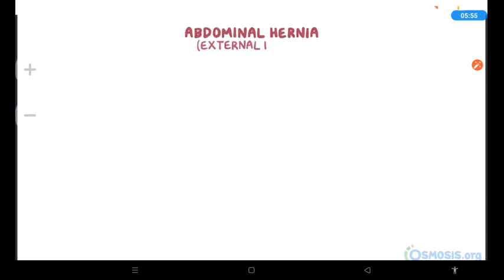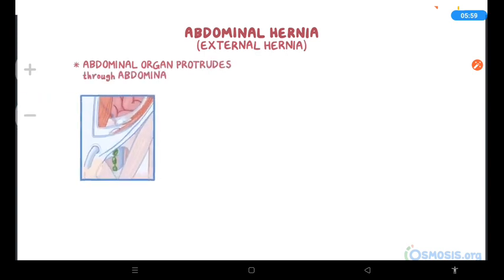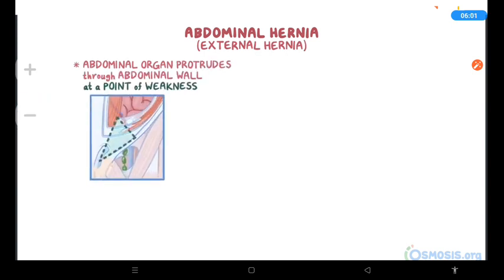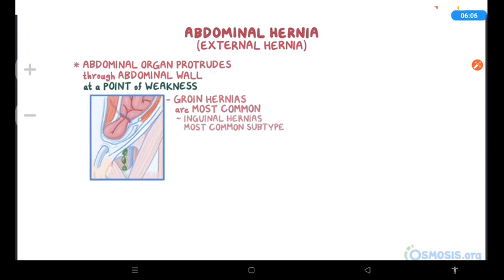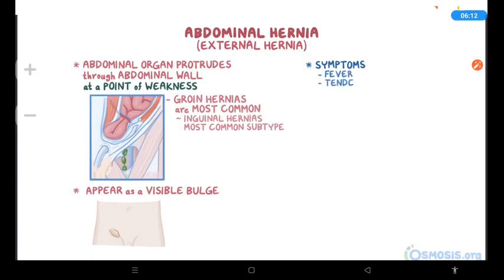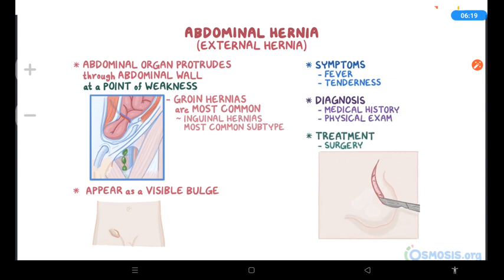Quick recap: abdominal hernias, also called external hernias, are when an abdominal organ or part of an abdominal organ protrudes through the abdominal wall, usually at a site of weakness. Groin hernias are the most common type of abdominal hernias, and inguinal hernias are the most common subtype of groin hernias. Clinically, hernias usually appear as a visible bulge, and depending on the complications, symptoms like fever or tenderness might be present. Diagnosis is commonly based on medical history and physical exam, and surgery is usually the treatment option for most hernias.